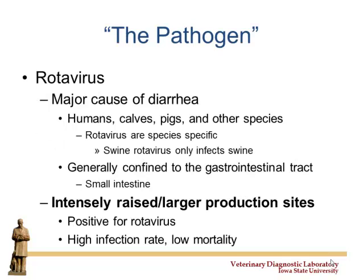As background, rotavirus is a major cause of diarrhea in most species — humans, calves, pigs, dogs, cats, you name it. The neat thing about rotavirus is that swine rotavirus, human rotavirus, and calf rotavirus are each only specific for that species, so we're only dealing with a couple things there, which is nice.